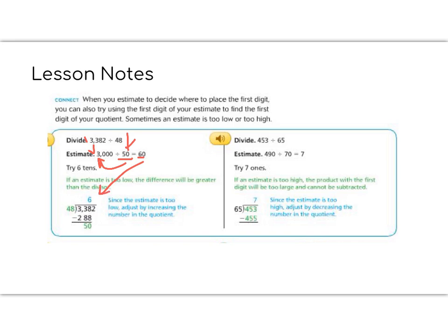Now in order to check it, we would need to multiply, and it says if an estimate is too low, the difference will be greater. So we multiplied 48 times 6 and we got 288. And when you subtract, you can see that I'm left over with 50, and 50 is more than the 48 we started with, so that's no good. It's too low.